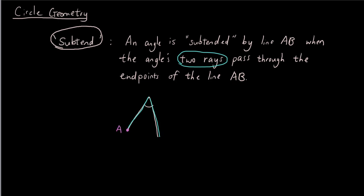So this is point A. This is point B. And the line A to B, these are the endpoints. And we can say that the angle's two rays, this one and this one, because they pass through the endpoints of the line AB, we can say that this angle, let's say angle X, angle X is subtended by line AB.